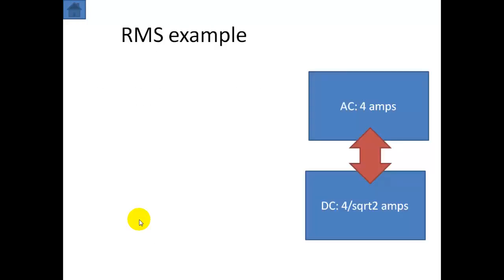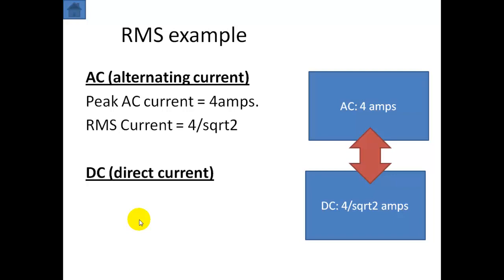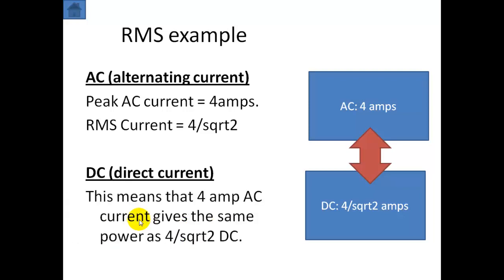Here's another example. For alternating current, if you've got a peak current of 4 amps, the RMS value is going to be 4 divided by √2. And if you have a direct current, this means that a 4 amp AC peak value is actually going to give the same power as 4/√2 in a DC circuit. So this peak value is actually going to give the same power as a DC circuit of 4/√2, or we could say the AC has an RMS value of 4 divided by √2.